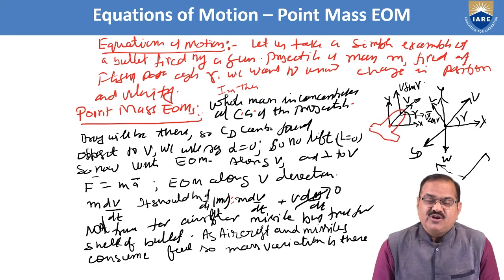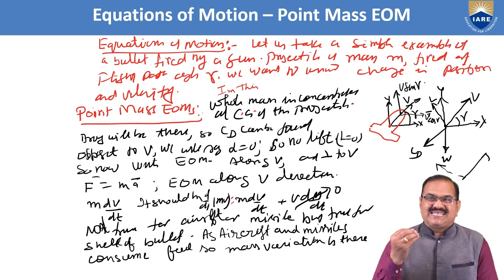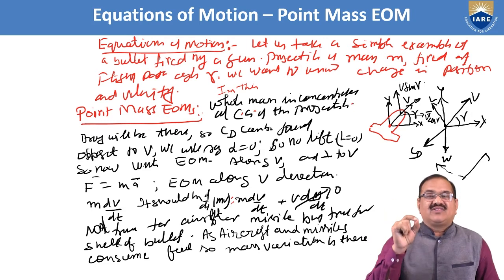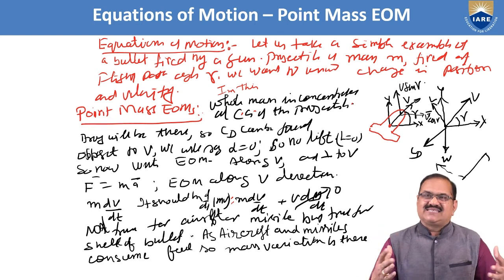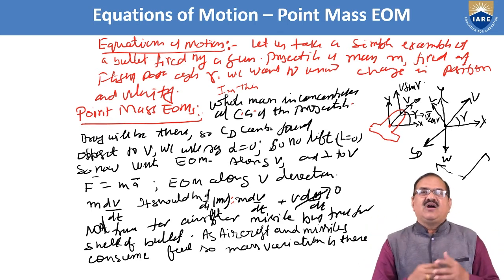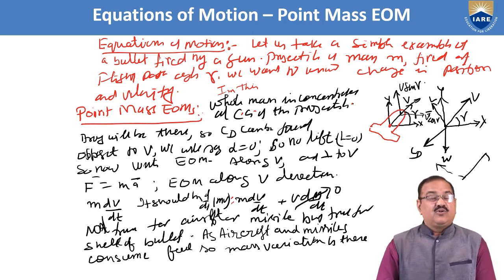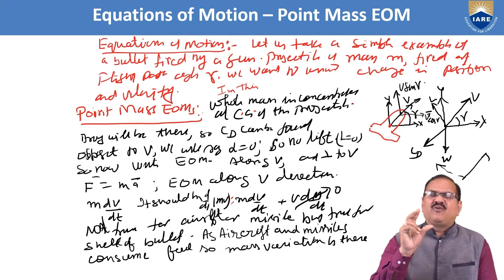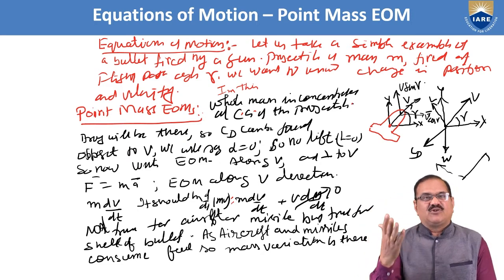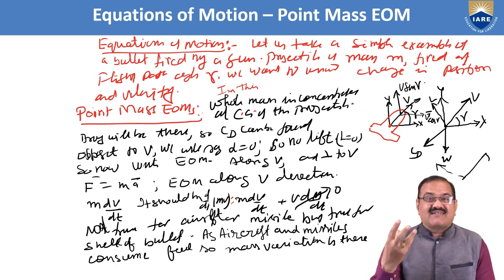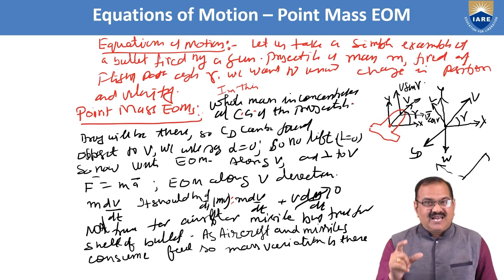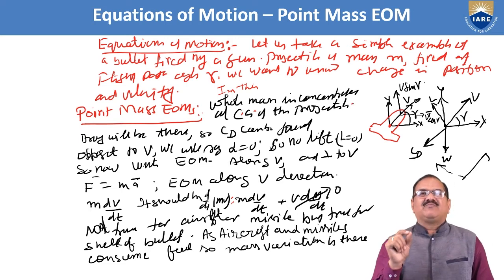I am going to discuss equations of motion. The first is a basic case: the point mass, where the total mass is assumed concentrated at the center of gravity. A bullet fired from a gun is a perfect example of a point mass, because unlike missiles or aircraft, a bullet carries no fuel and its mass does not change during flight. So the point mass case is well suited to the bullet.